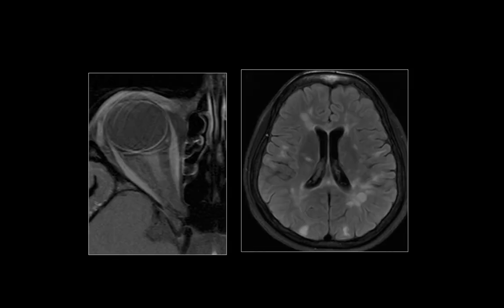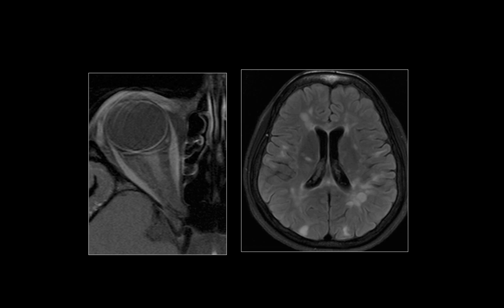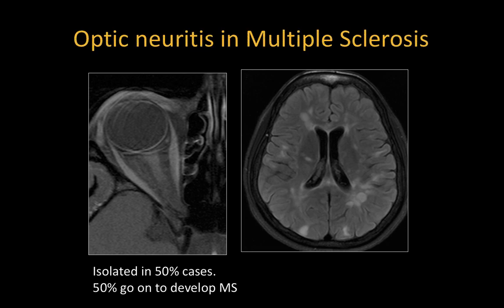Optic neuritis can be idiopathic in 50% of cases, or it can be associated with various demyelinating syndromes. In this case, only the anterior part of the intraorbital segment of the optic nerve is involved, and the rest is spared. This patient also had multiple plaque-like lesions in the periventricular white matter perpendicular to the lateral ventricles, with multiple juxtacortical lesions. This is classic multiple sclerosis.